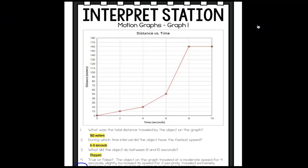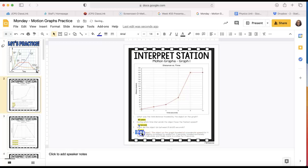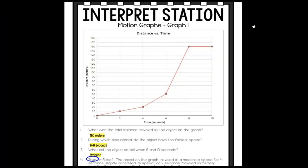Now we have to look at this statement and see if it's true or false. The object on the graph traveled at a moderate speed for 4 seconds, I'd say that's pretty accurate. Then it slightly increased its speed for 2 seconds, I can see my slope got a little higher. And then it traveled extremely fast for 2 seconds, got a very steep slope there. And finally came to a stop for 2 seconds. That is accurate, that completely describes my graph here, so I'm going to click true.